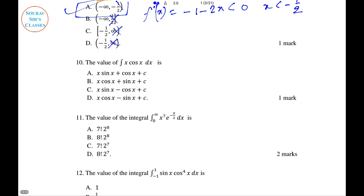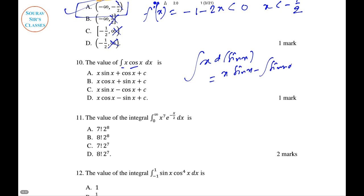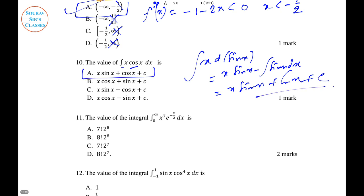Question 10: Integration of x cos x. This is a uv (integration by parts) formula — equivalently, integrating d(sin x). This gives x sin x minus the integration of sin x dx, which equals x sin x + cos x plus a constant. Option A is correct.